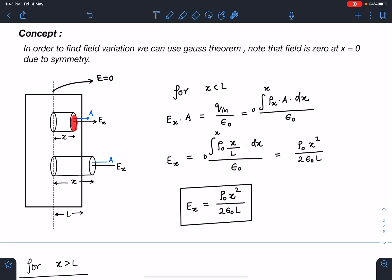For x less than L, the overall flux through this cylinder is E_x·A = Q_in/ε_0, where charge inside is ∫ρ dV, with dV = A dx. Integrating from 0 to x, I get the electric field as a function of x coordinate: E_x = ρ_0 x²/(2ε_0 L), which is a parabolic function.